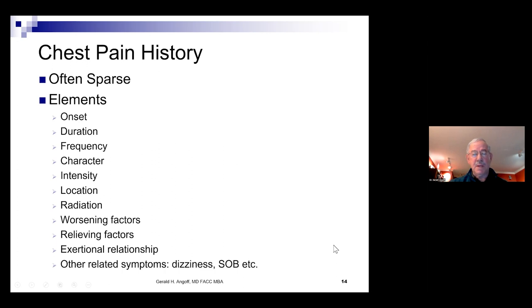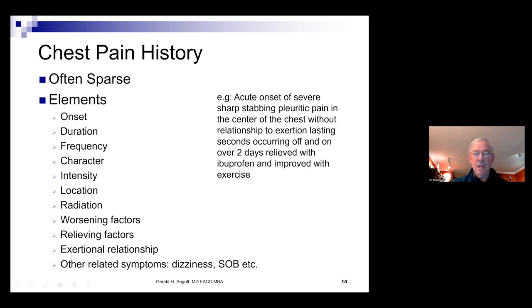Recall in our second scenario, exertion relieved the discomfort rather than made it worse. And are there other related symptoms? It can be an effort to collect elements like this and be able to express it. Here's an example. And see what you think. Acute onset of severe, sharp, stabbing, pleuritic pain in the center of the chest without relationship to exertion, lasting seconds occurring off and on over two days relieved with ibuprofen and improved with exercise.